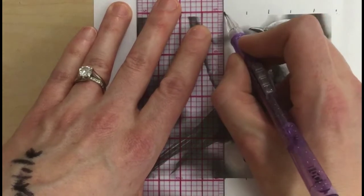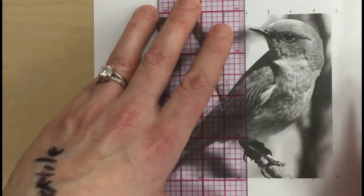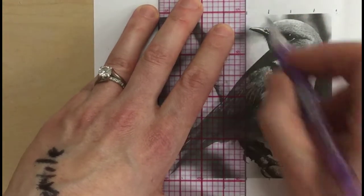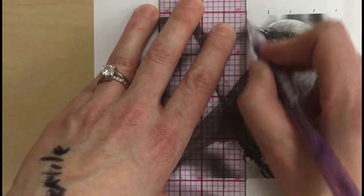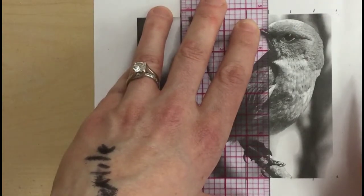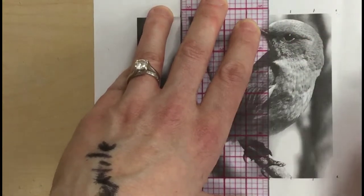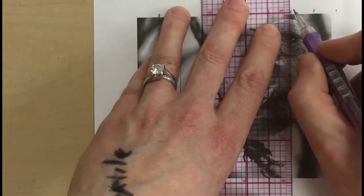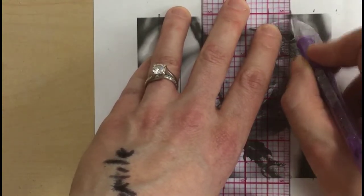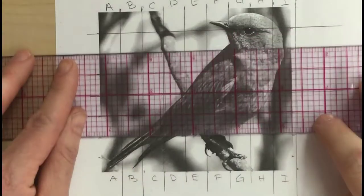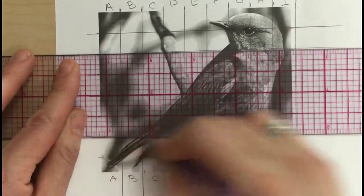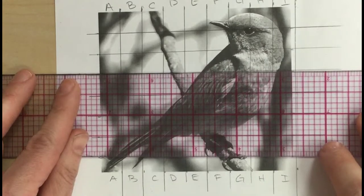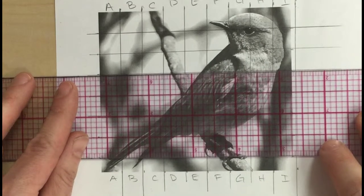If you don't grid correctly, your entire project will be distorted and off, so doing this accurately is very important. The reason I had you guys do a four-inch grid is because we are going to enlarge these to an 8x8, so on our next piece of paper we are going to do a 1-inch grid, which will make it double the size.